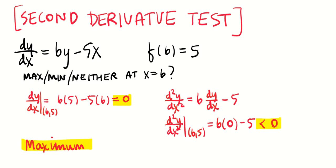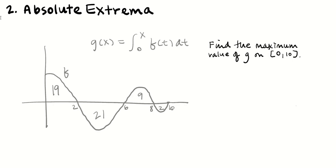Some students will say 'the second derivative is positive, therefore it's a maximum' without checking that dy/dx equals 0 — that gets you nothing. Please don't do that. You must verify dy/dx equals 0 as the first step before applying the second derivative test.